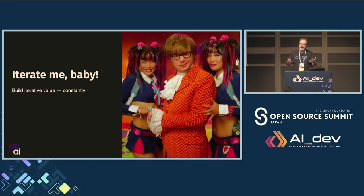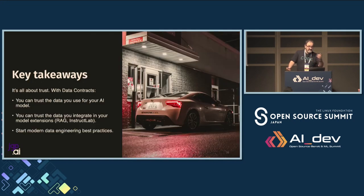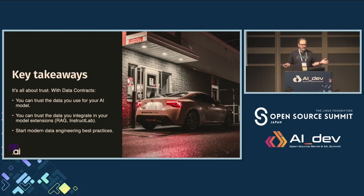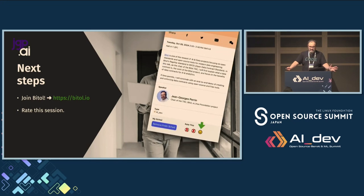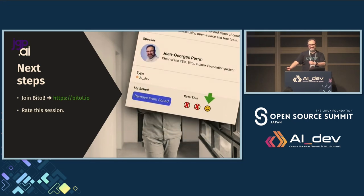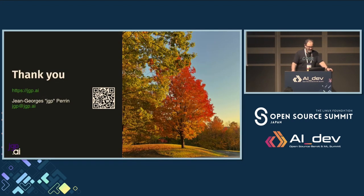One key thing: when you start with data contracts, start with a very basic version and iterate over it. As a key takeaway — it's always about trust. A speaker this morning was talking about AI and trustworthiness. This is about building trust for your data. Next step: please join BITOL — it's a Linux Foundation project. Join us at BITOL.io. We've got a link to our Slack at the bottom and plenty of resources there. Thank you very much — I have books, you have questions.